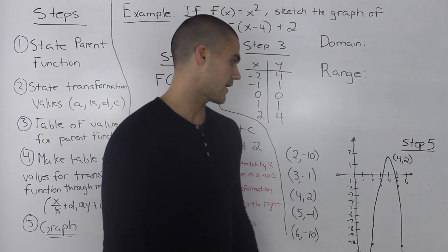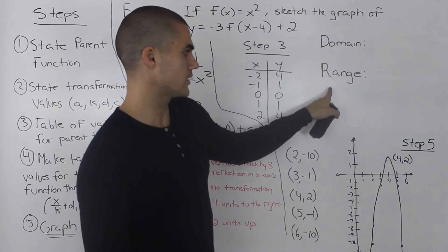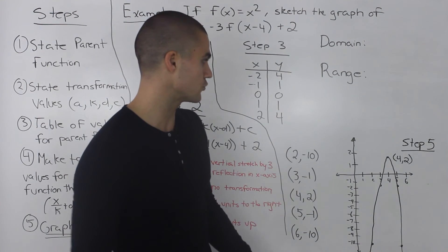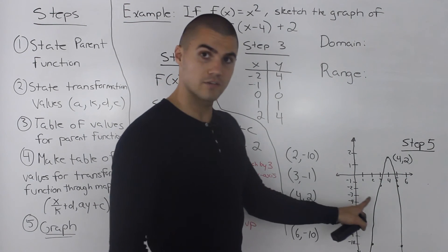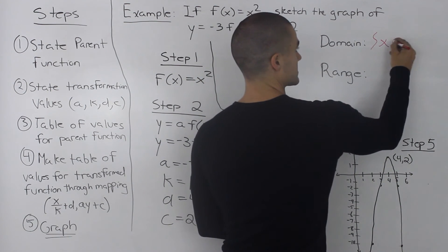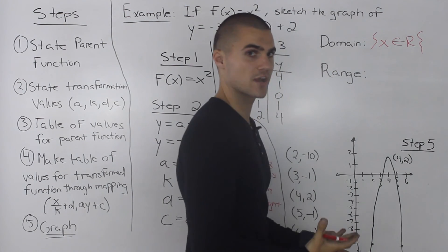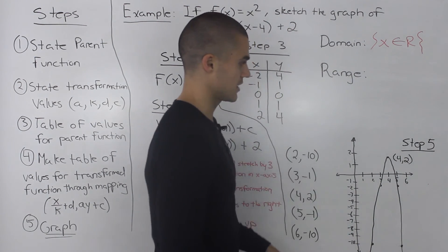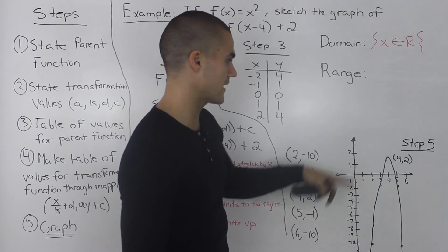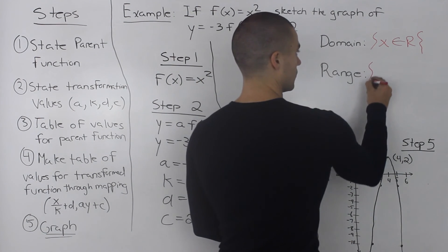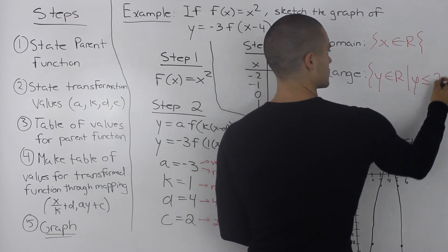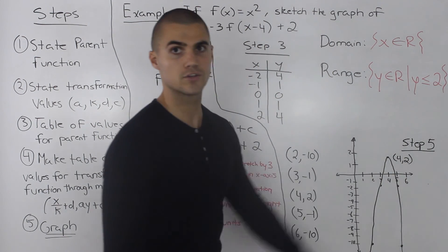As a bonus, let's state the domain and range of the transformed function. The domain is all real numbers since x can be anything for a parabola. For the range, since the parabola opens downward with a maximum vertex at (4, 2), y can be anything less than or equal to positive 2. So the range is y is less than or equal to 2.